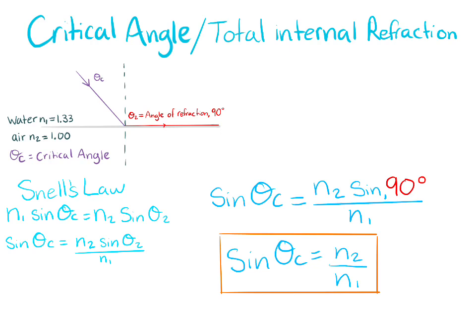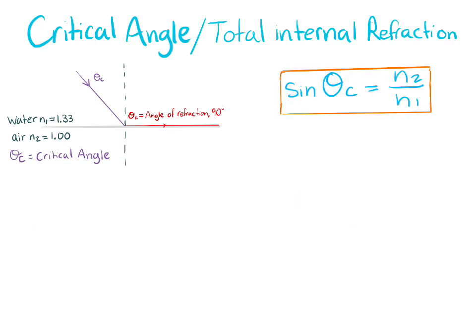Then, since 90 degrees is 1, you can take that out, which leaves you with n2 over n1. Now, we plug in n1 and n2 into this equation, which gives us sin theta c equals 0.75.